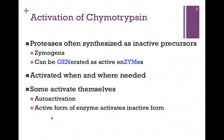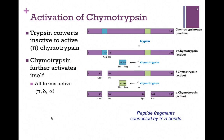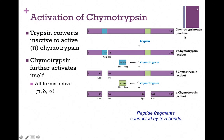Let's see how that works in the case of chymotrypsin. As it's synthesized from the ribosome, it's chymotrypsinogen — this is the zymogen form. As you can see at the top of the screen, it contains 245 amino acid residues. The first event to occur is hydrolysis by trypsin, which breaks the peptide bond between residues 15 and 16 — arginine and isoleucine residues — and that converts inactive chymotrypsinogen to active pi-chymotrypsin.